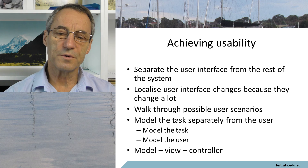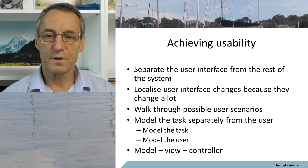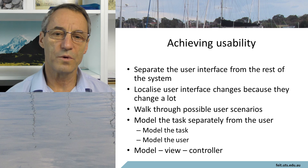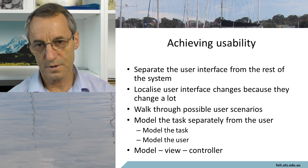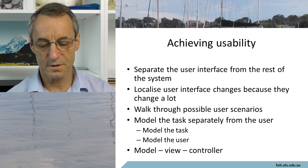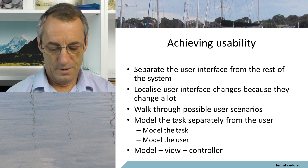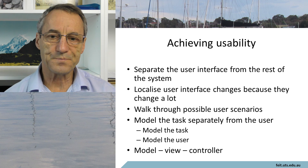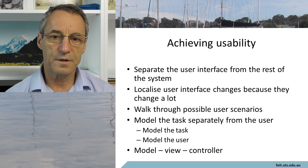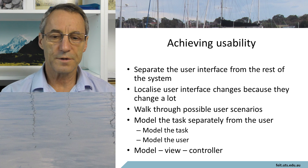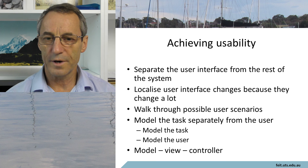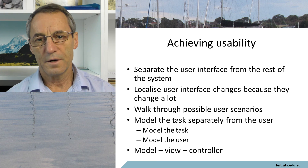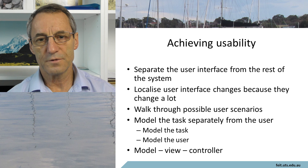We walk through possible user scenarios — this is where we identify what kind of thing the user wants to do and how we have to provide for it. In the case of, say, banking out a transaction, that's one circumstance. We model the task separate from the user, and we probably use an overall architecture such as Model-View-Controller, Action-Domain-Responder, or something of that nature as the base architecture.